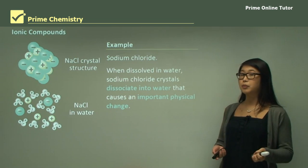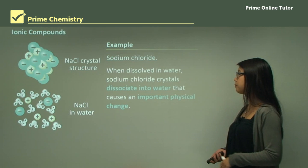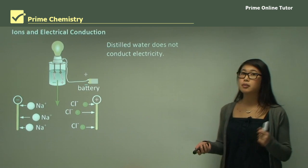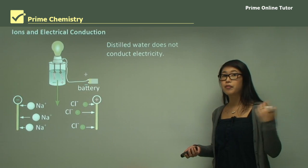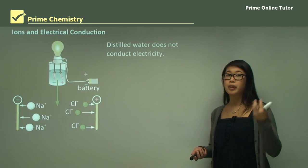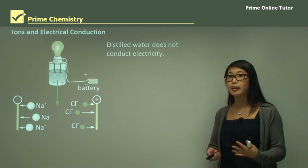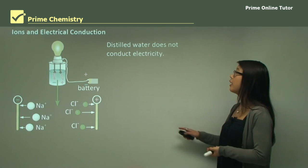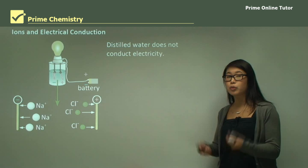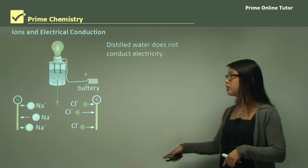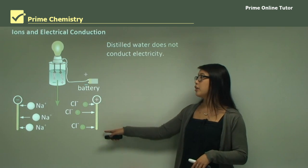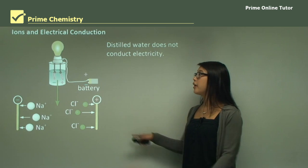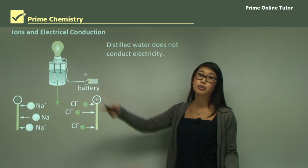A physical change is from a solid to a liquid state. In distilled water — water that has been evaporated and recondensed so it contains nothing but water molecules — there is no electrical conductivity. If we put electrodes in, there is no electric current and therefore the light won't turn on.